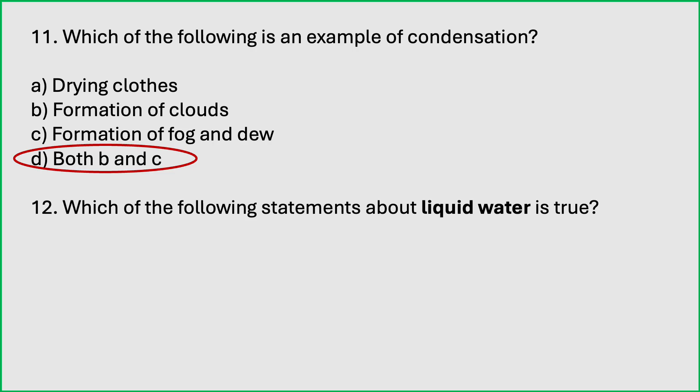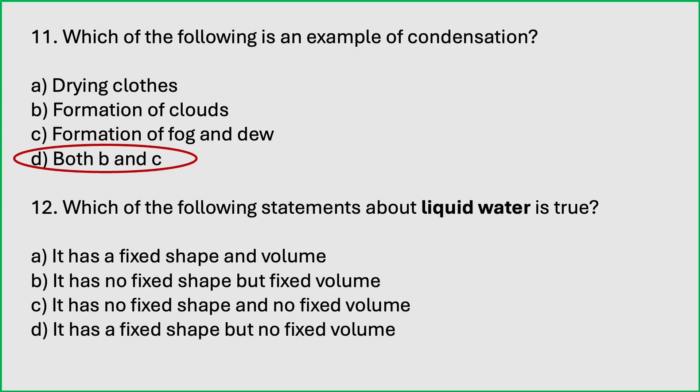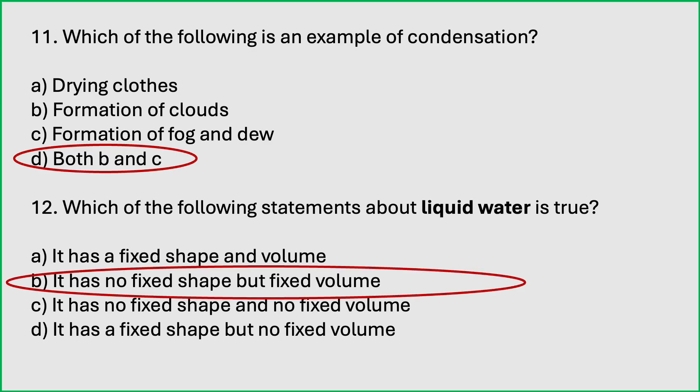Which of the following statements about liquid water is true? It has a fixed shape and volume; it has no fixed shape but fixed volume; it has no fixed shape and no fixed volume; it has a fixed shape but no fixed volume. Which is the correct answer? About liquid water — it has no fixed shape but it has fixed volume. Water does not have a fixed shape; it takes up the shape of the container in which it is kept. But the volume of water remains constant.